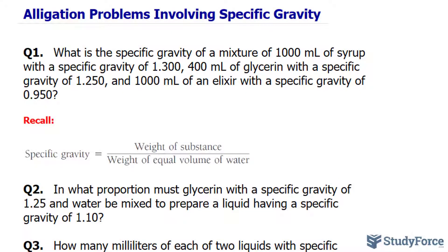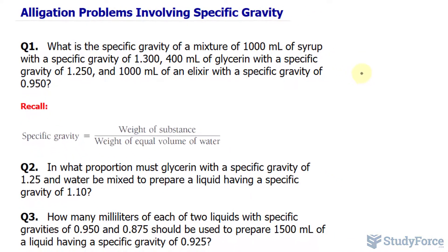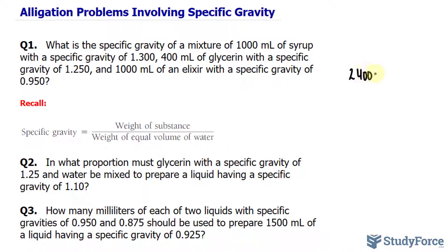The first thing that I want to do is find out what the weight of equal volume of water is for these three substances. And that can be done by adding 1000, 1000, and 400 together. So the bottom part of this equation, which is the weight of equal volume of water, will be the sum of those three numbers, and that's 2,400 milliliters.